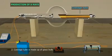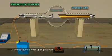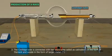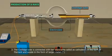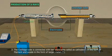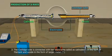The Coolidge tube is made up of a glass bulb. The Coolidge tube is connected with two electrodes: cathode C in the form of a filament, and anode in the form of target metal T.